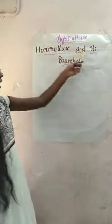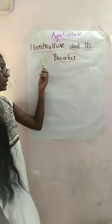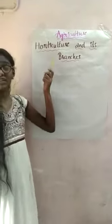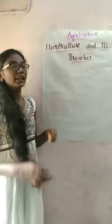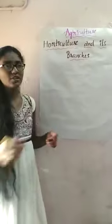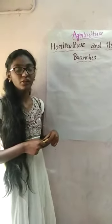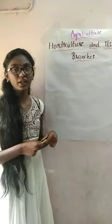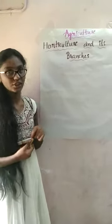Today we are going to learn about horticulture and its branches. First we should know what is horticulture. Horticulture is one of the best in agriculture. Agriculture is which deals with the cultivation of soil — it is called agriculture.